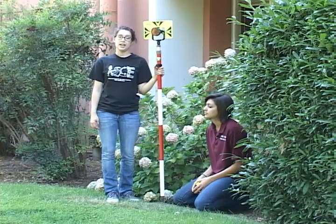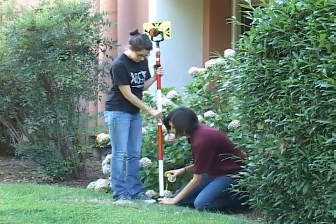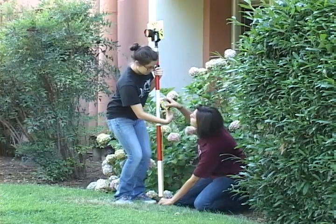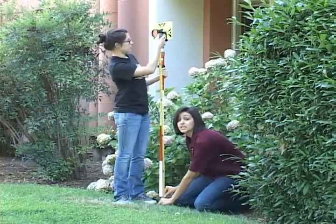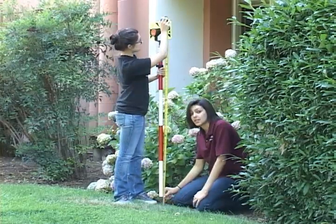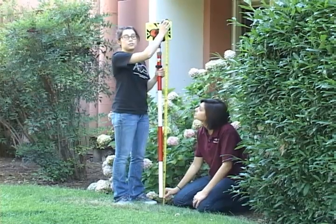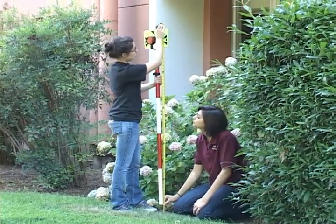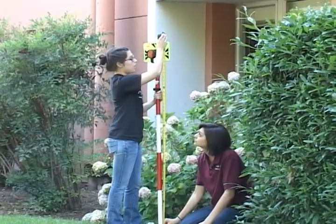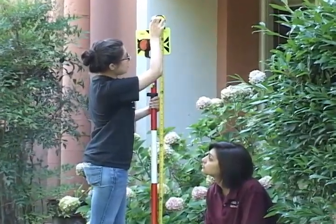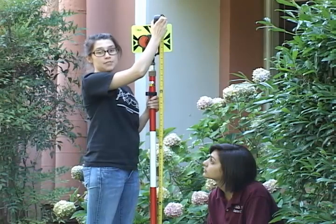Now we're going to measure the height of the rod. When measuring the height of the rod, it's important that the rod is on a hard and stable surface. When you take your actual measurement, just line up the tape with the arrow on the rod. In this case, the height of the rod is 4.87 feet.